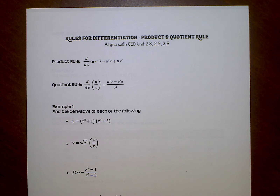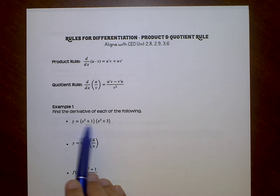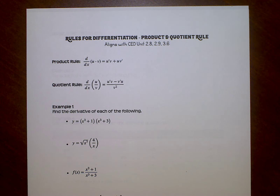Hi, everyone. So we're going to continue with differentiation rules here today, and we're going to start with the product and quotient rule. Today is mostly just product and quotient rule. What I told you yesterday was that when we do derivatives of things that are being added and subtracted, it's really easy — you can just take the derivative of the individual pieces and add them together. It's more complicated for multiplying and dividing functions.